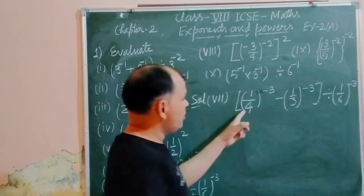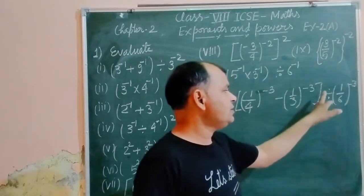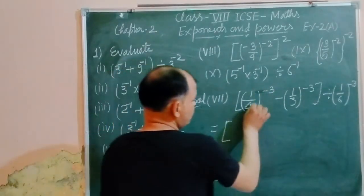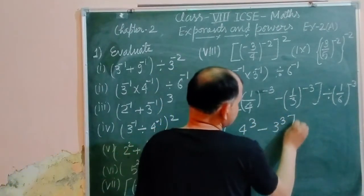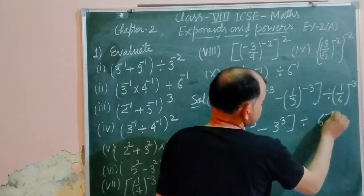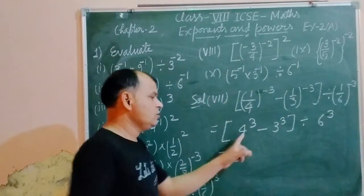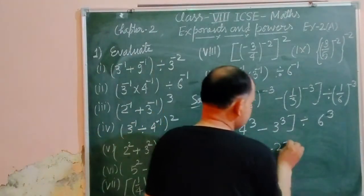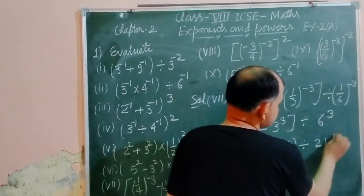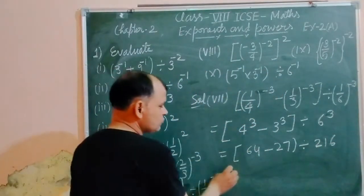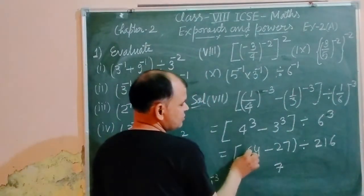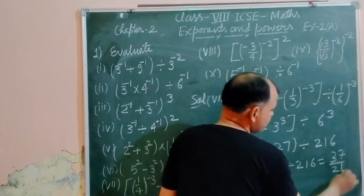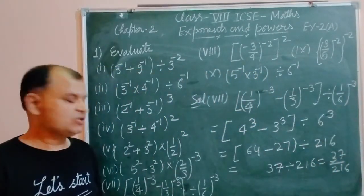The seventh part: (1/4 to the power minus 3 minus 1/3 to the power minus 3) divided by 1/6 to the power minus 3. We change the negative powers: 1/4 to the power minus 3 becomes 4 cubed = 64, 1/3 to the power minus 3 becomes 3 cubed = 27, and 1/6 to the power minus 3 becomes 6 cubed = 216. So (64 minus 27) divided by 216 = 37 over 216. The answer is 37 over 216.